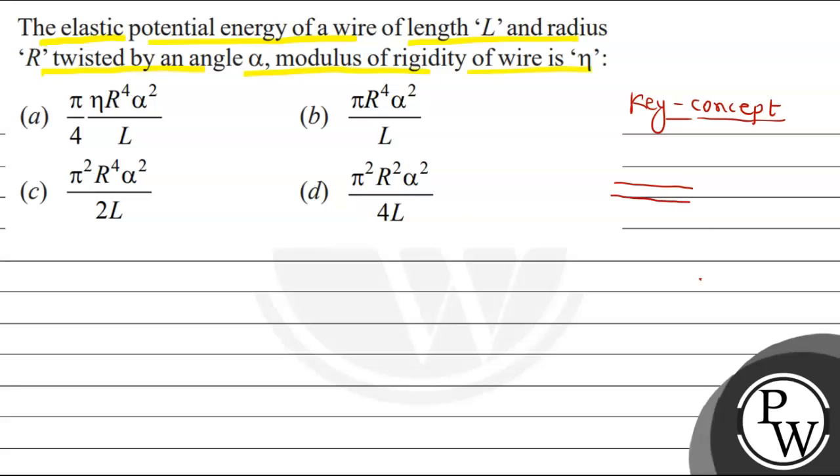Suppose we have a rod. We have to fix the base and twist the top. The layers will slip and stress is produced due to mutual shifting of layers. A shear stress is produced.